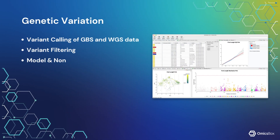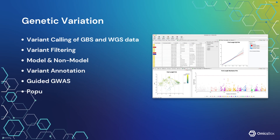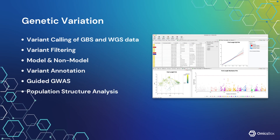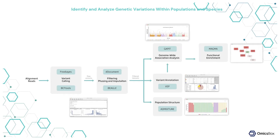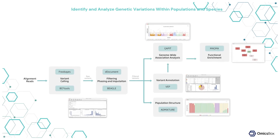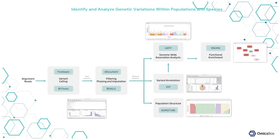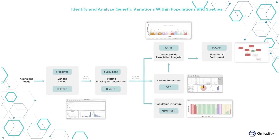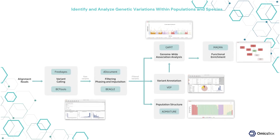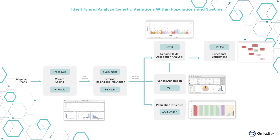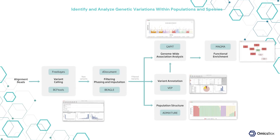Genetic Variation enables high-throughput variant calling, filtering, and annotation, together with GWAS and population structure analyses, helping uncover genetic associations and functional impacts.